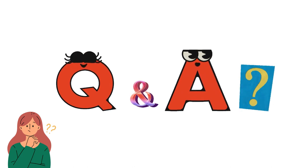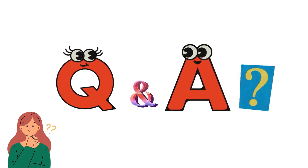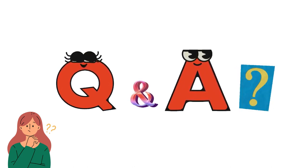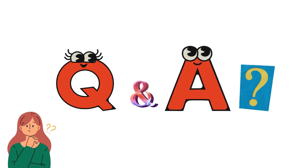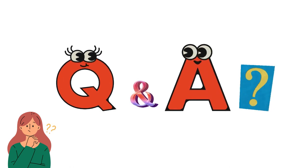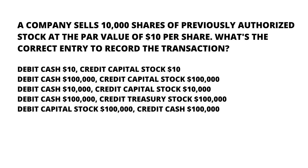So let's start the question. For today's question: a company sells 10,000 shares of previously authorized stock at a par value of $10 per share. What's the correct entry to record the transaction?